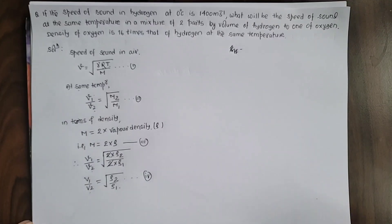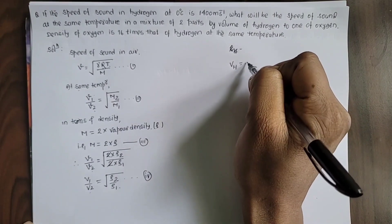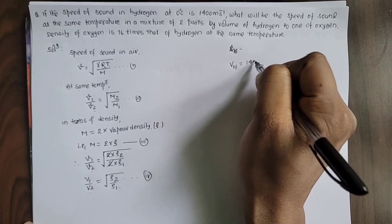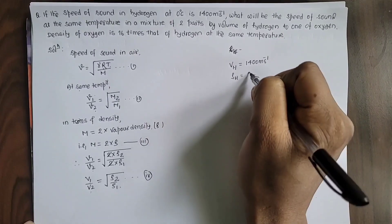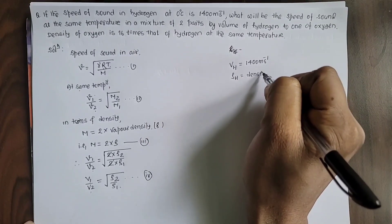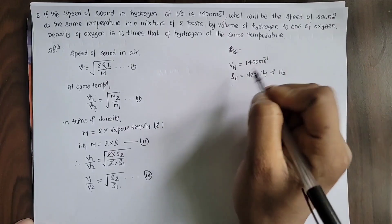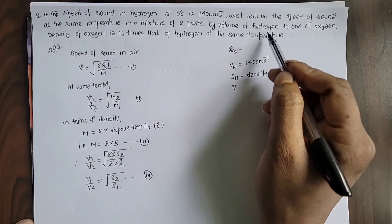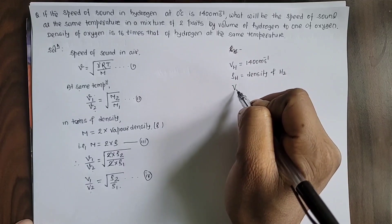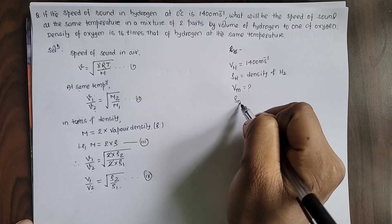For the solution: let V_H be the speed of sound in hydrogen, which is 1400 meters per second, and let ρ_H be the density of hydrogen. We need to find the speed of sound in the mixture of hydrogen and oxygen gases.